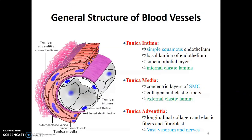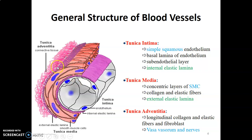The general structure of blood vessels — the histology of blood vessels: blood vessels have an inner tunica intima, followed by tunica media, and tunica adventitia. Those are the three layers of blood vessels: tunica intima, media, and adventitia.